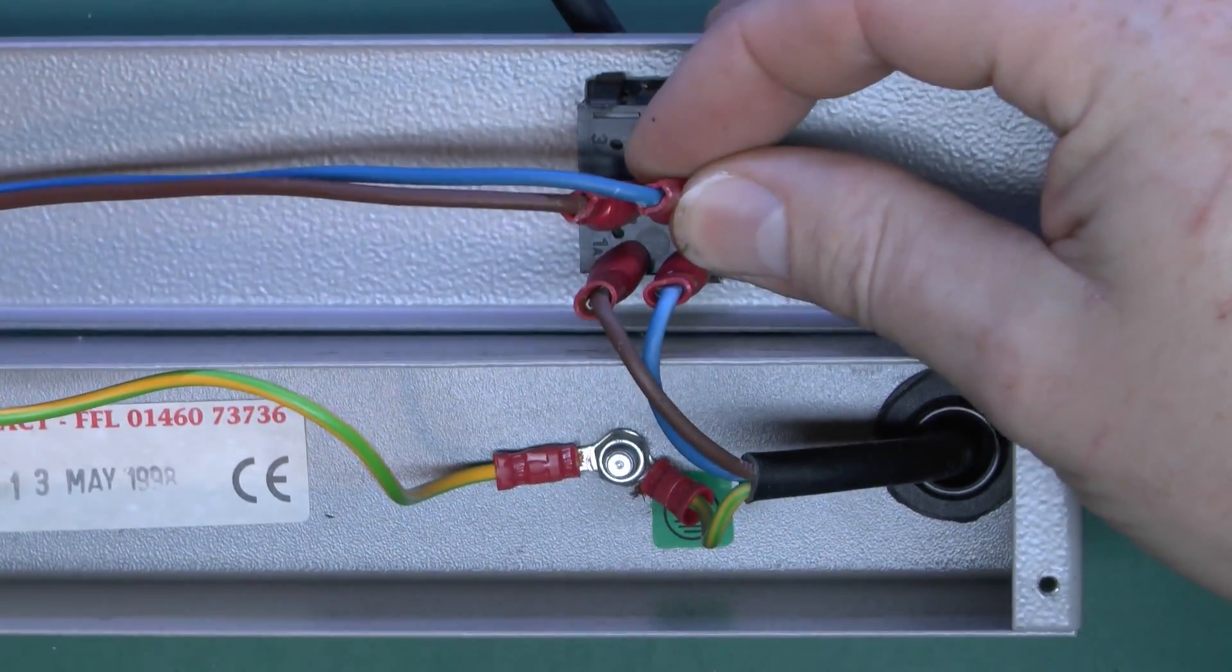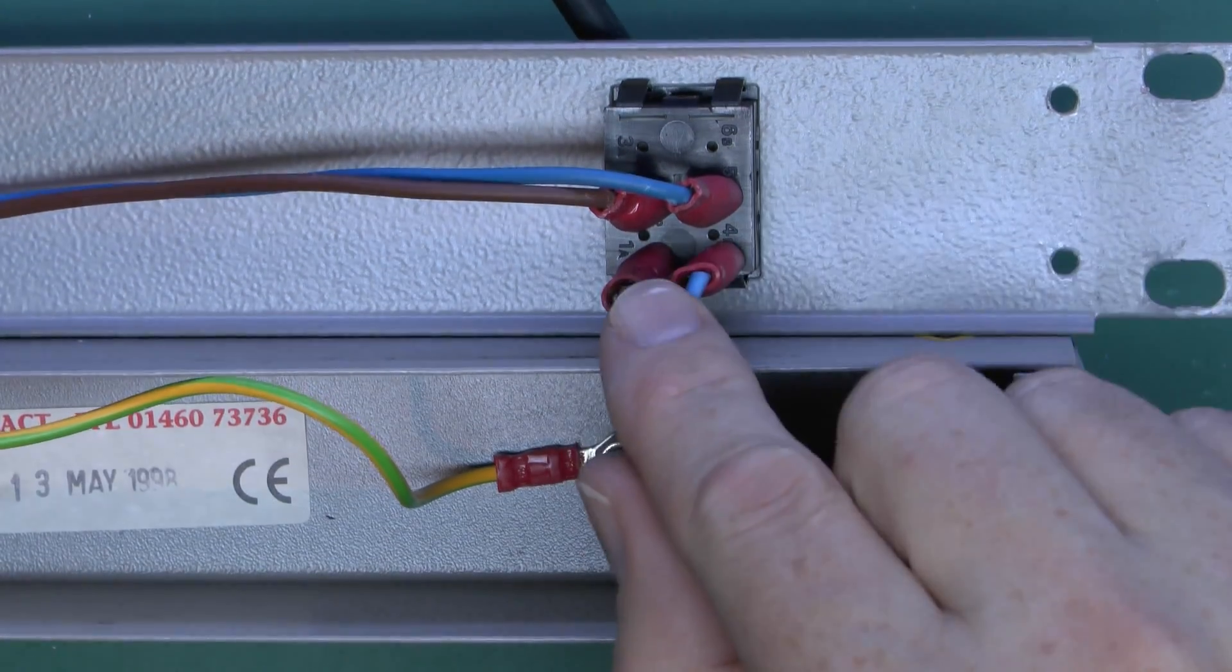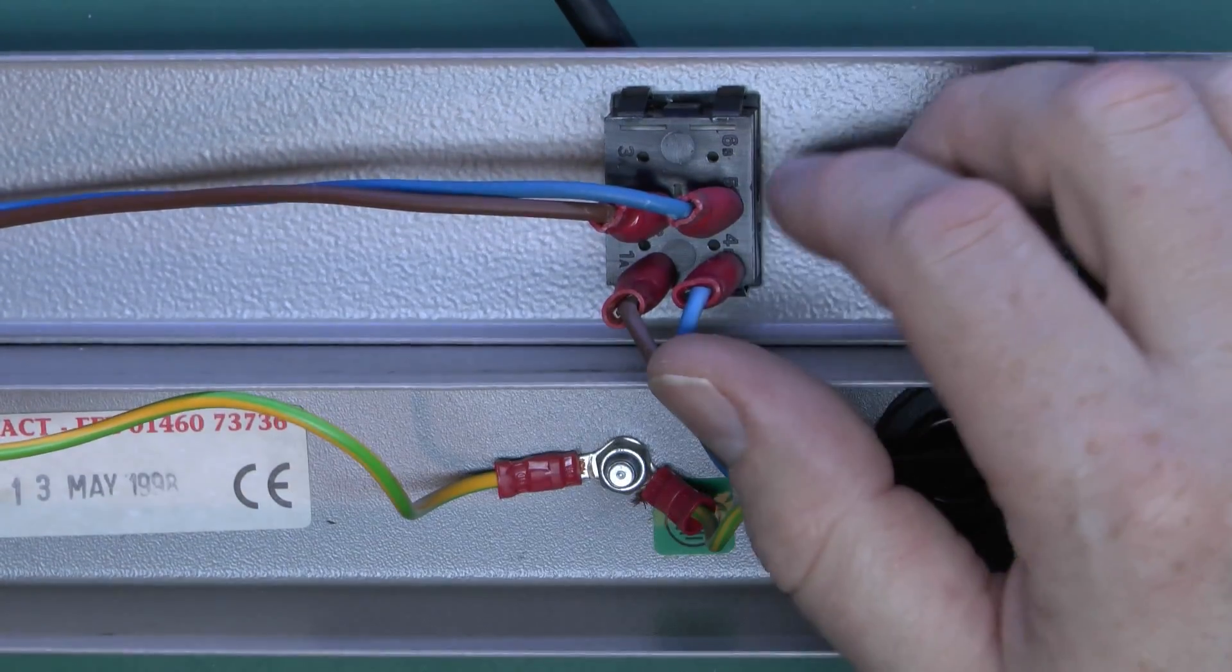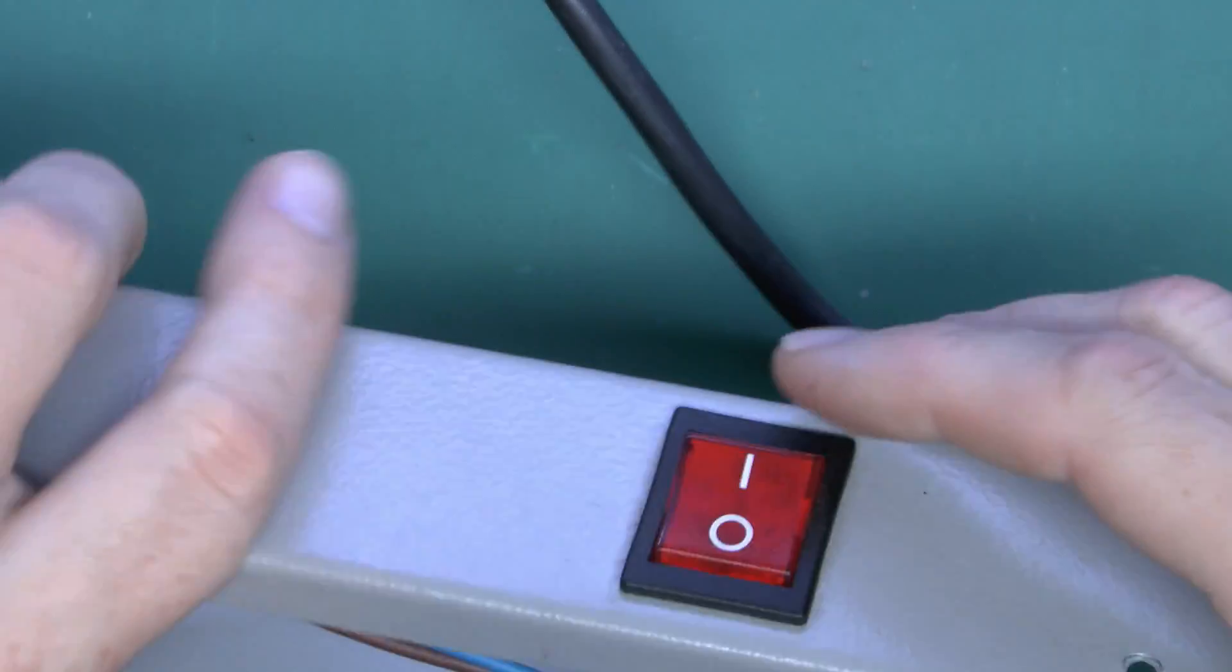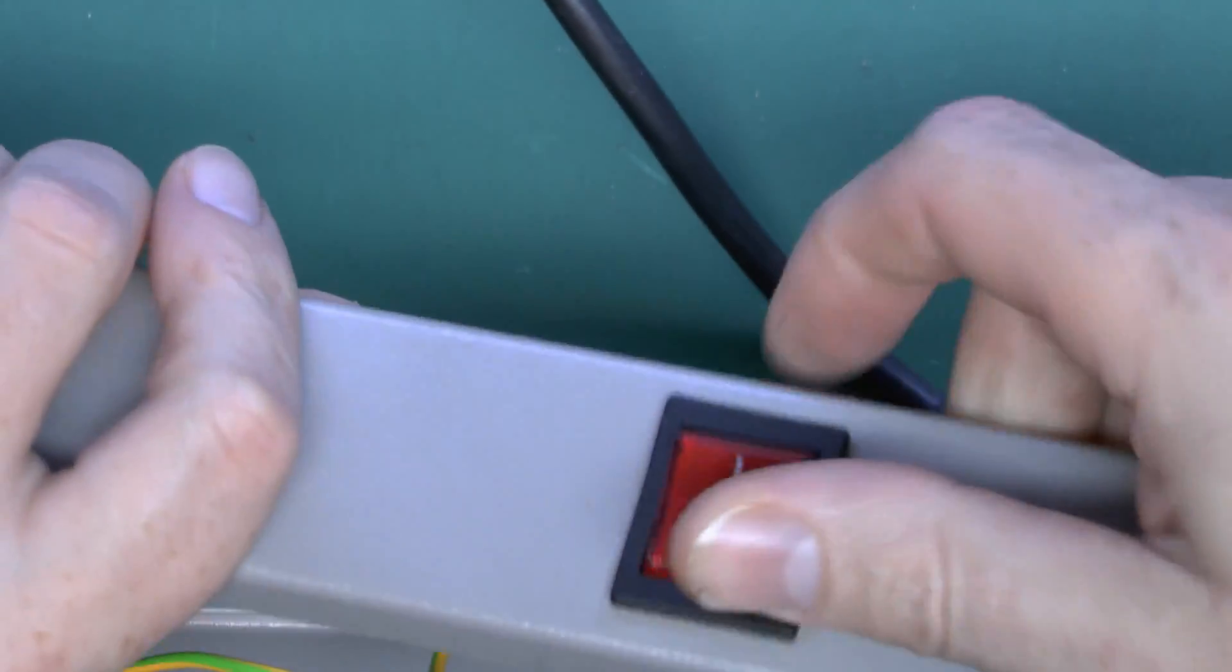This is the back of the switch here. So the mains just comes in straight onto the switch there and it just goes out again to the outlet over there. And a double pole switch, and also appears to be of the illuminated variety.